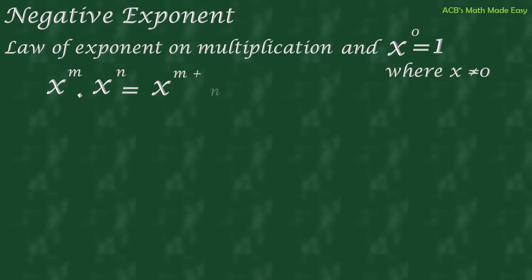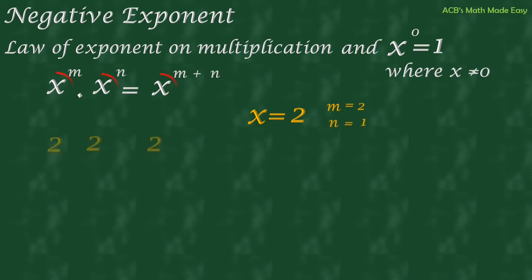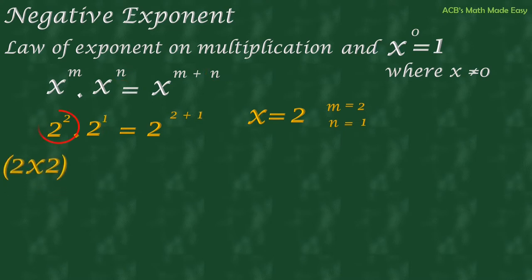Let's say our value of x is 2, m is 2, and n is 1. So 2 squared means 2 times 2, and 2 raised to 1 is just 2. This equals 2 raised to 2 plus 1, which becomes 2 cubed.